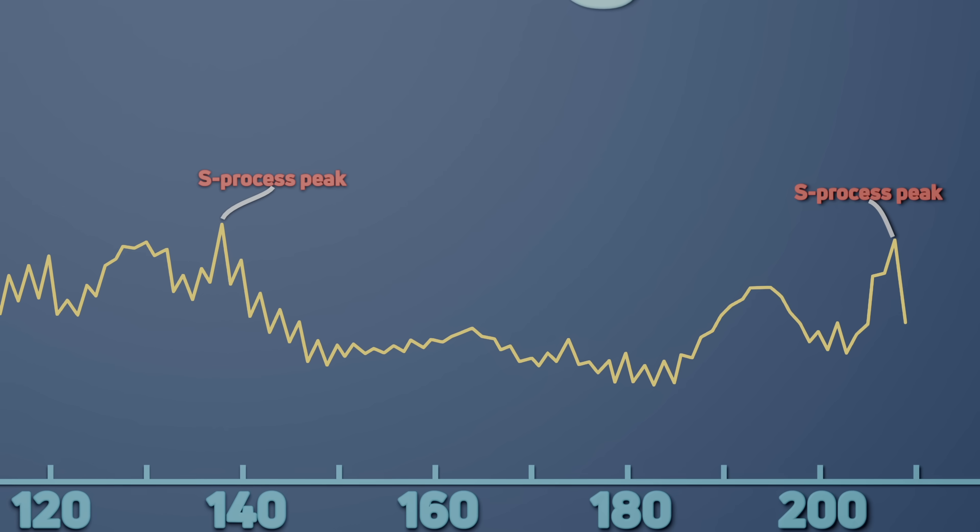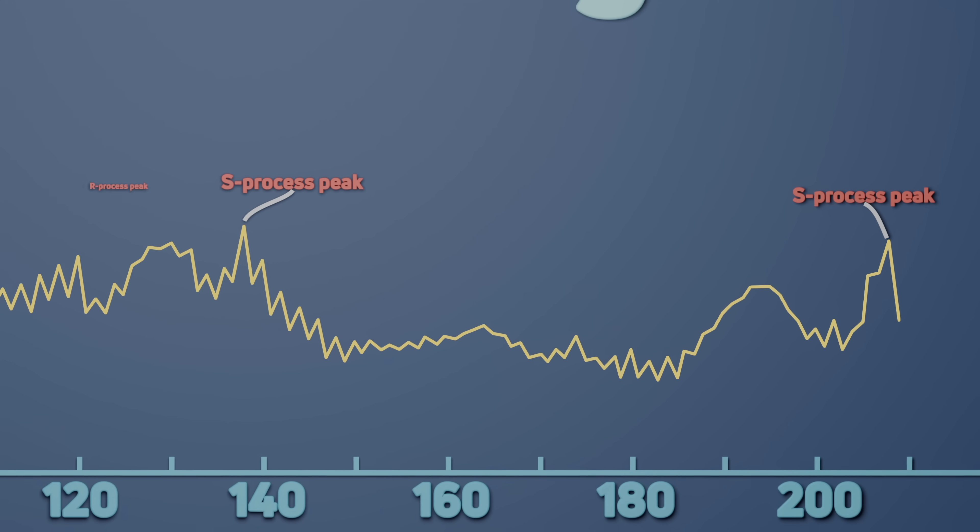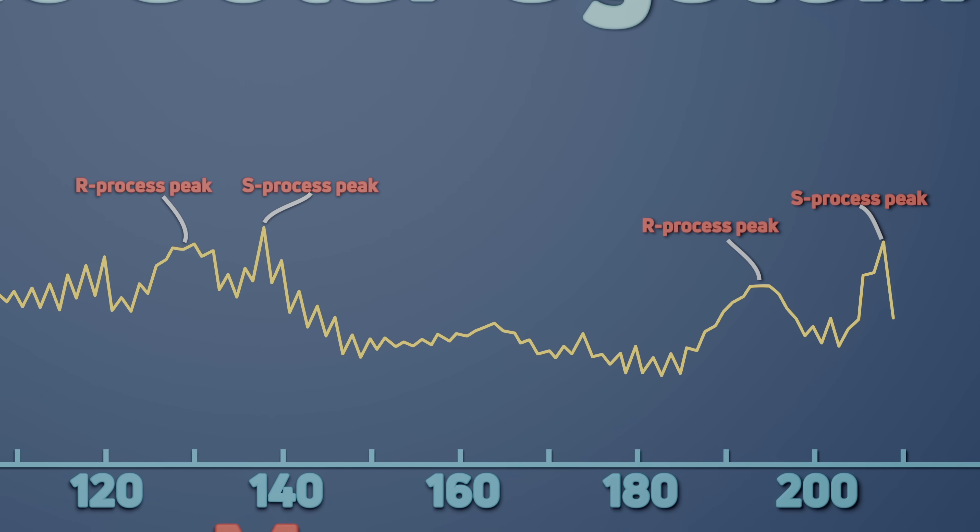So for R process elements, their peaks are shifted a bit to the left of the S-process peaks, because they have less mass.